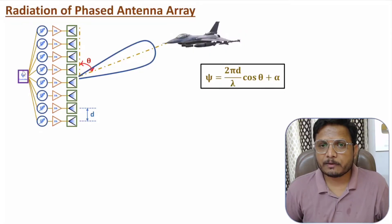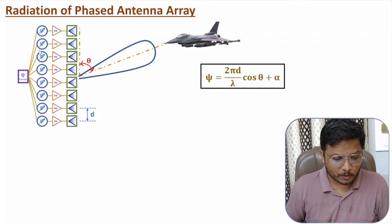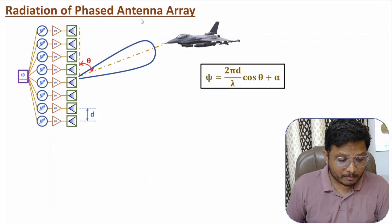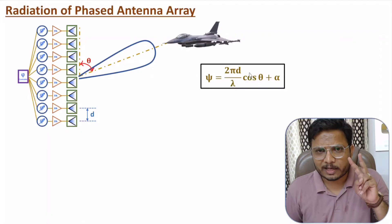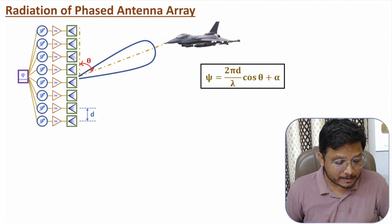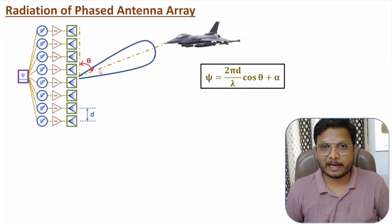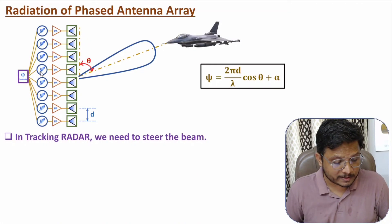In many applications, we use DSP processors to control the values of the phase shifter. By electronic beam switching, one can steer the beam towards the target. The radiation mechanism of phased antenna array is purely based on how much phase shift we provide, denoted by alpha in the equation. By changing the value of phase shift, we can change the value of theta — the angle of radiation.